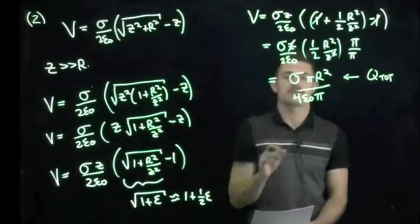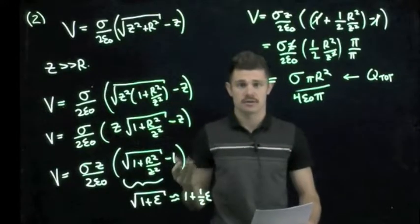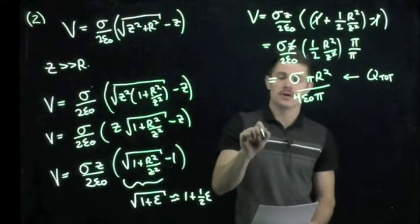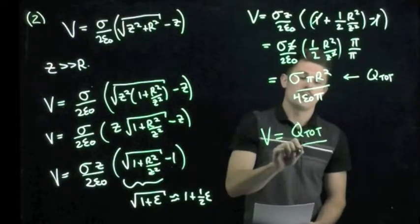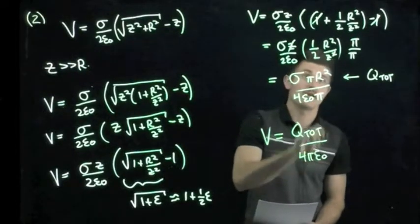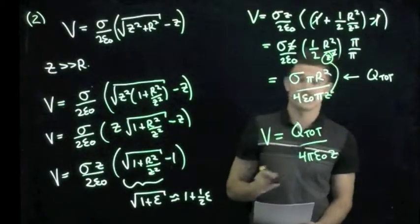Where we have the sigma is our charge density over the entire area and the area of that disk is pi r squared. So we get our final potential is now q total over four pi epsilon naught z. Sorry, I forgot to bring this z down here. So four pi epsilon naught z.